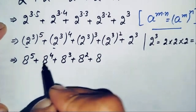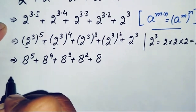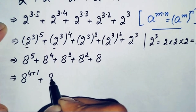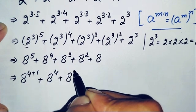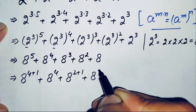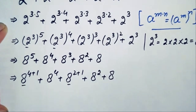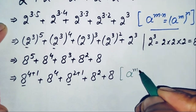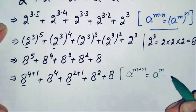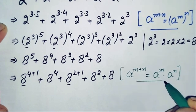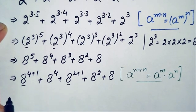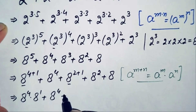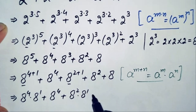Next, we will make the powers of the base terms the same. We can write 8 raised to power 5 as 8 raised to power (4 plus 1), and 8 raised to power 3 as 8 raised to power (2 plus 1). Now we use the exponential property: a raised to power (m plus n) equals a raised to power m times a raised to power n. Applying this, the equation becomes: 8 raised to power 4 times 8 raised to power 1, plus 8 raised to power 4, plus 8 raised to power 2 times 8 raised to power 1, plus 8 raised to power 2, plus 8.